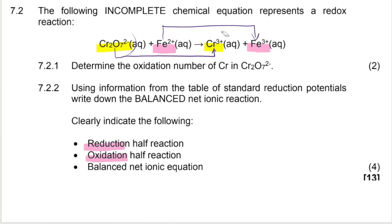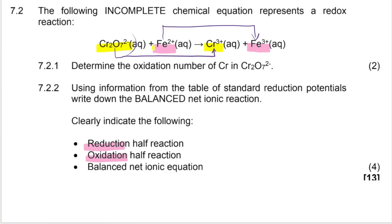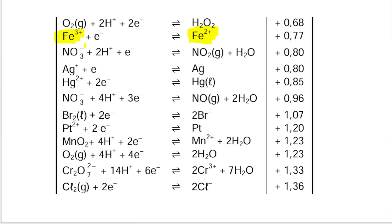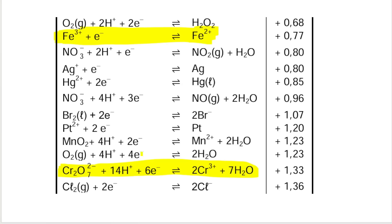Let's go take a look at the table. Here is a half reaction with Fe³⁺ on the one side and Fe²⁺ on the other side, just like I've got — 2+ and 3+ on either side of the arrow. That's my first half reaction. Then the other one I'm looking for has Cr₂O₇²⁻ on the one side and Cr³⁺ on the other side. So there are my two half reactions.